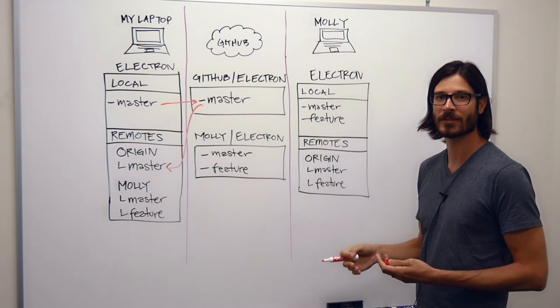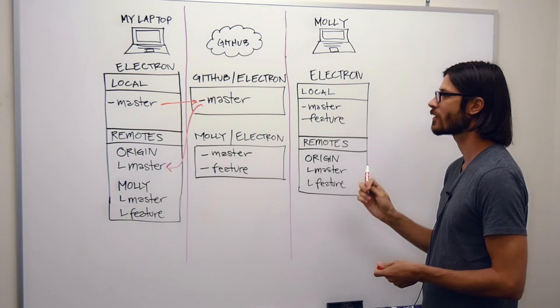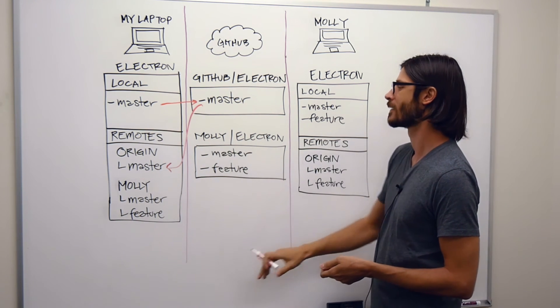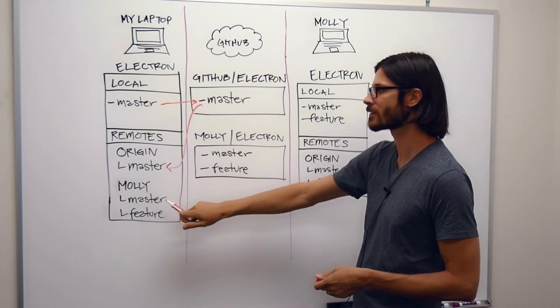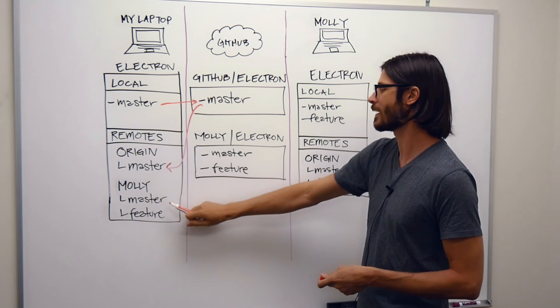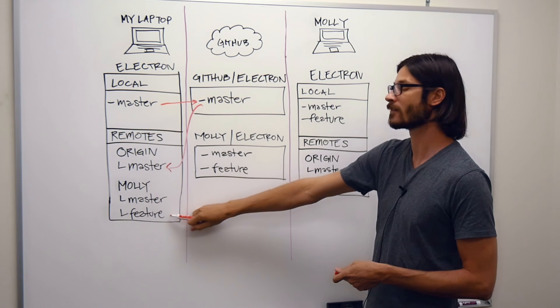Now I want to add Molly's remote so that I can collaborate with her on this feature. So instead of doing a clone, I would just do a git add, and git allows you to name that remote whatever you want, so it makes it easier to reference. So in this case, I've named it Molly, and now I can see that there are a master and a feature branch that are available to me.